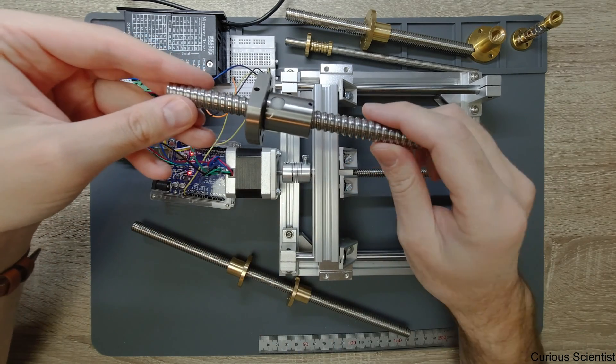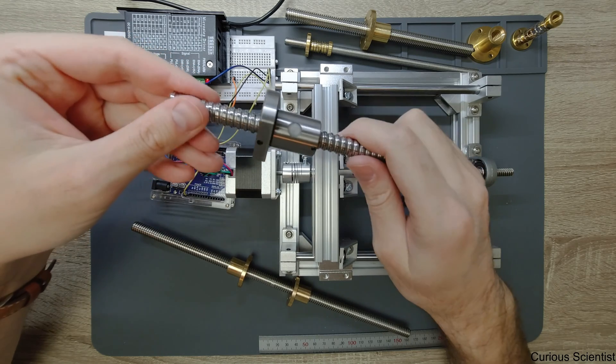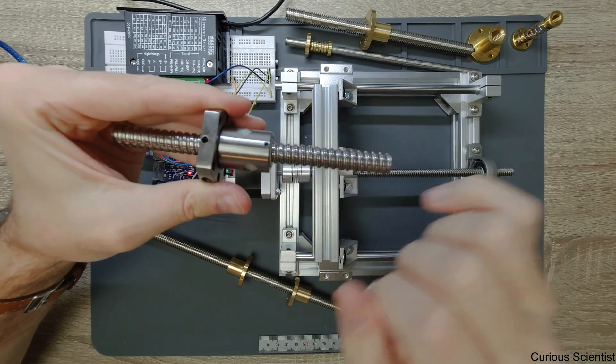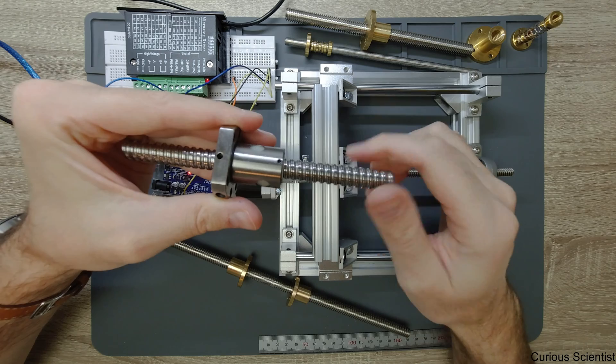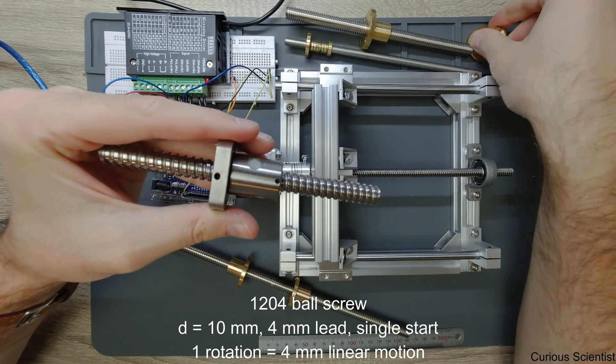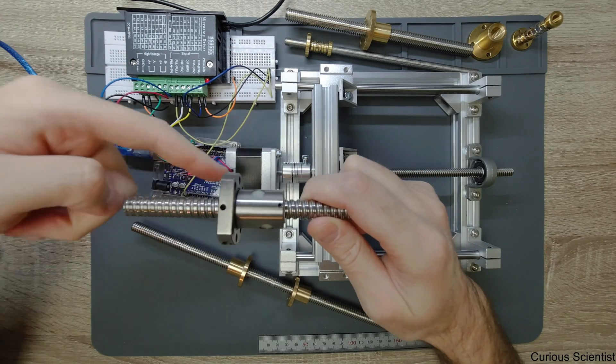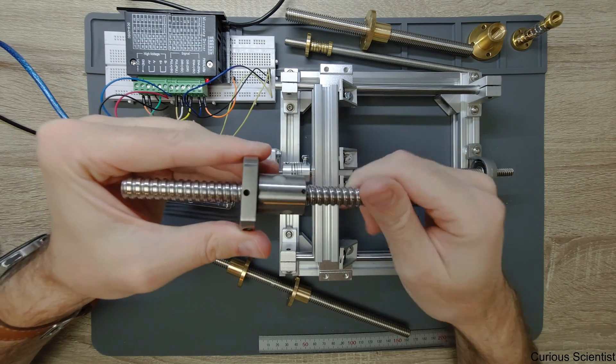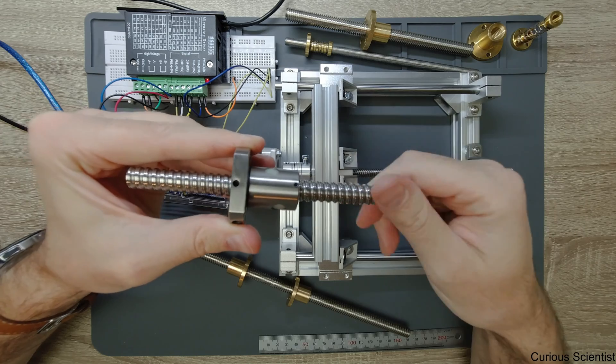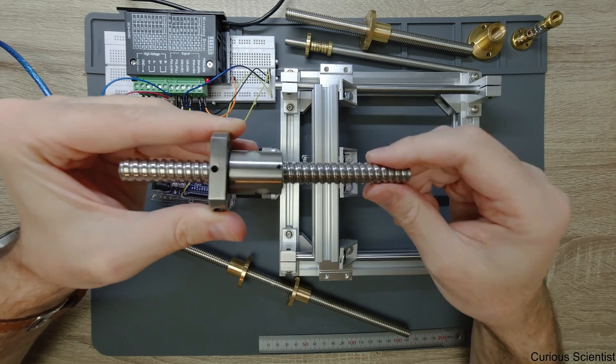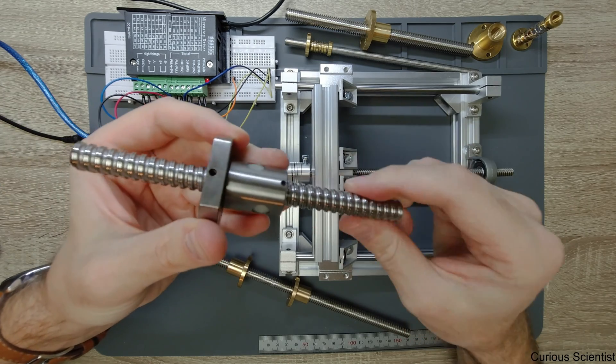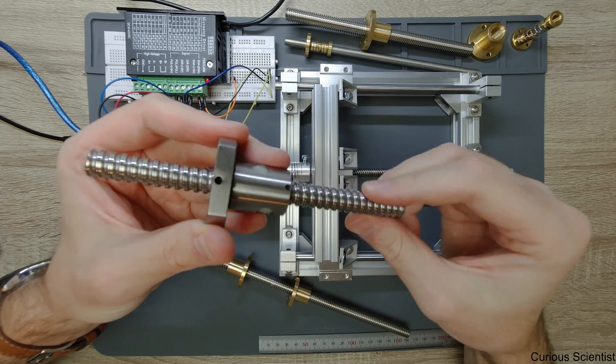And then this is the ball screw. The principles are the same. You have the lead and instead of having simple nuts with the thread inside, you have balls circulating in this body, which means there is less friction. The movement is maybe a bit more precise and more smooth due to the balls.